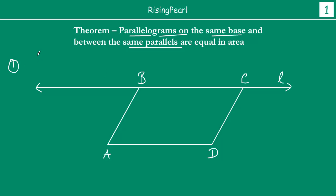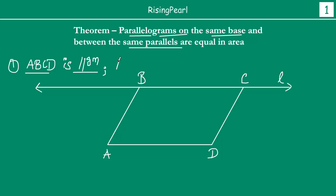So what we have, friends, is: number one, ABCD is a parallelogram. Now if ABCD is a parallelogram, you know that opposite sides of a parallelogram are equal and parallel. So AD is equal to BC, and AD is also parallel to BC. This means that since AD is parallel to BC, AD is also parallel to line L, which is nothing but an extension of BC. So our first condition is that ABCD is a parallelogram, and our second condition is that AD is parallel to line L.